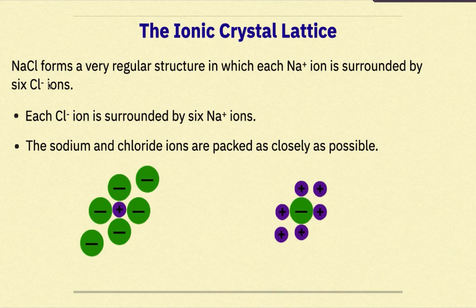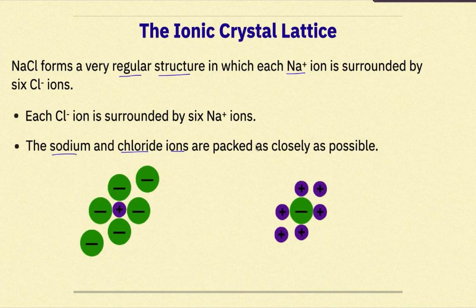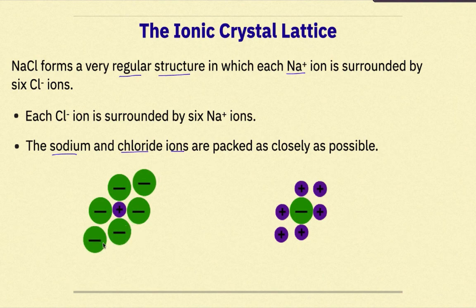The ionic crystal lattice: NaCl forms a very regular structure in which each sodium ion is surrounded by 6 chlorine ions, and each chlorine ion is surrounded by 6 sodium ions. The sodium and chloride ions are packed as closely as possible together. In this simulation, we initially see the positive purple symbol representing our sodium ion, surrounded by 4 chloride ions, one on each side.